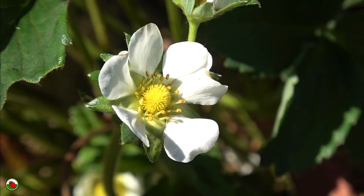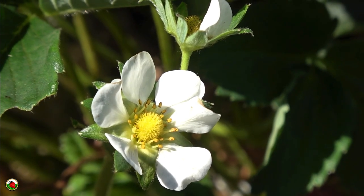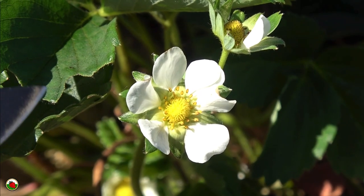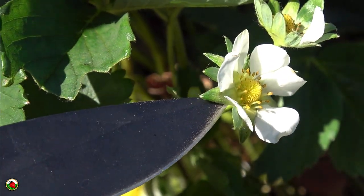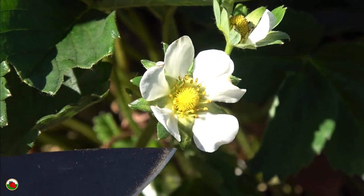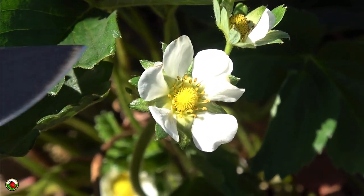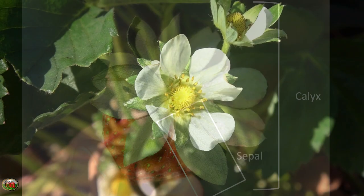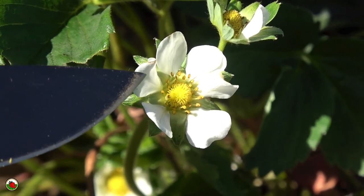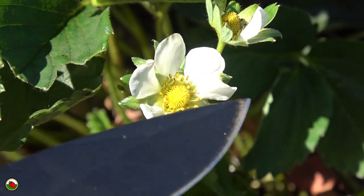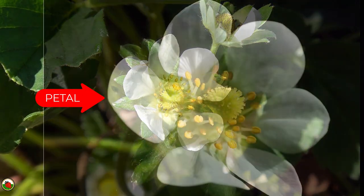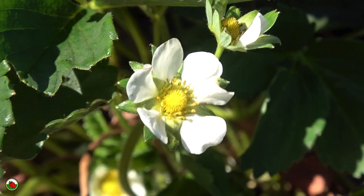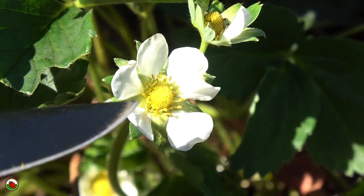The strawberry flower is super interesting — this is what will eventually become the delicious red fruit that we love to eat. Where the pedicel ends, we have the calyx. The common name and botanical term are the same: petals. Each flower has five or six petals arranged in a circle around the yellow structure in the middle called the receptacle.